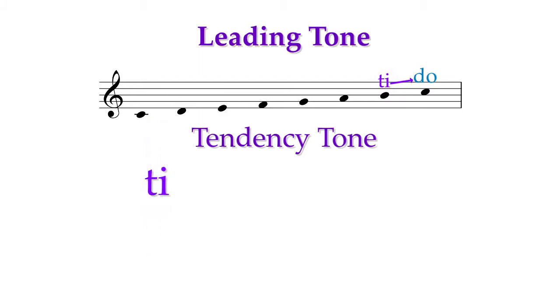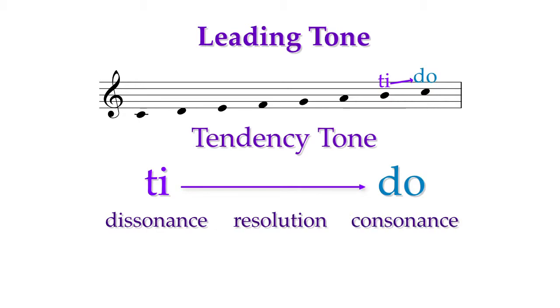This strong tendency to want to hear a specific note occur next is called musical or melodic dissonance. The movement to the note that you want to hear next is called resolution. The note that makes that resolution sound complete is described as being melodically consonant.